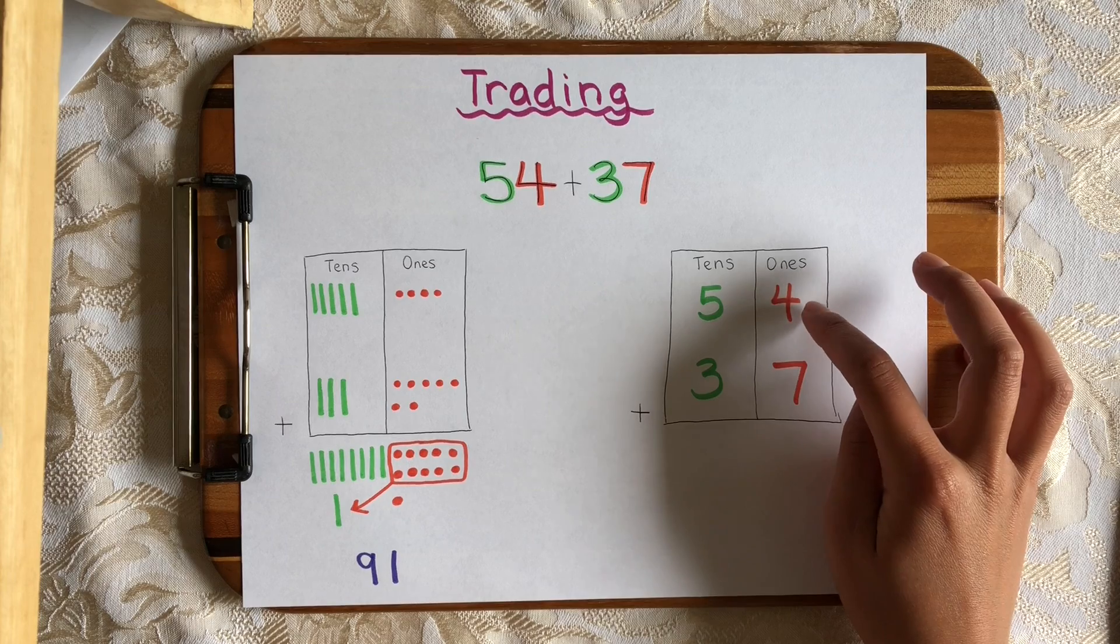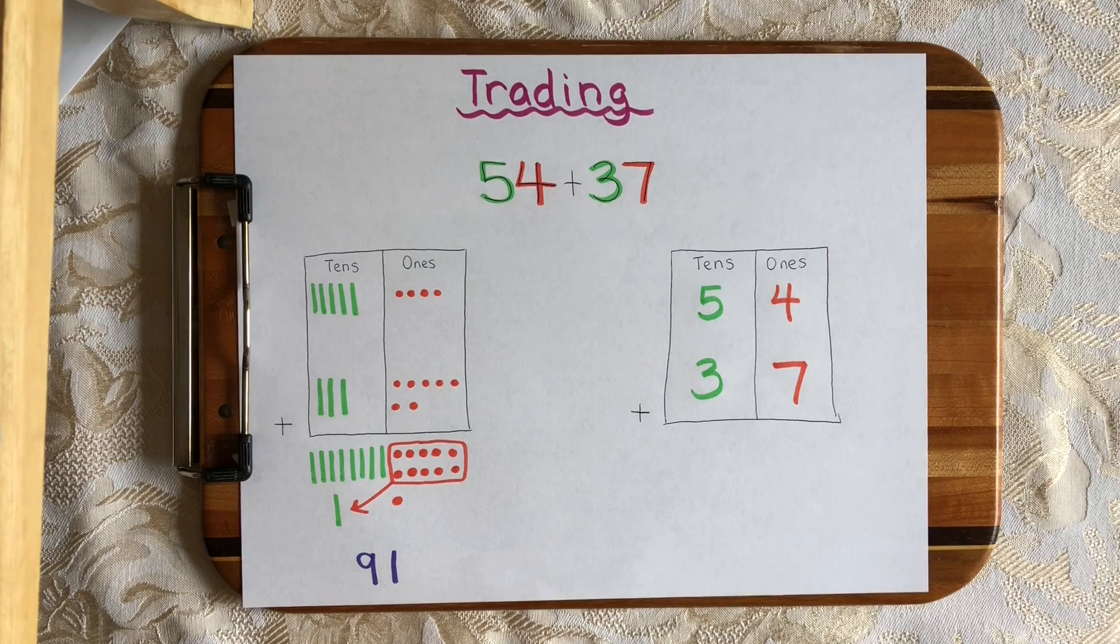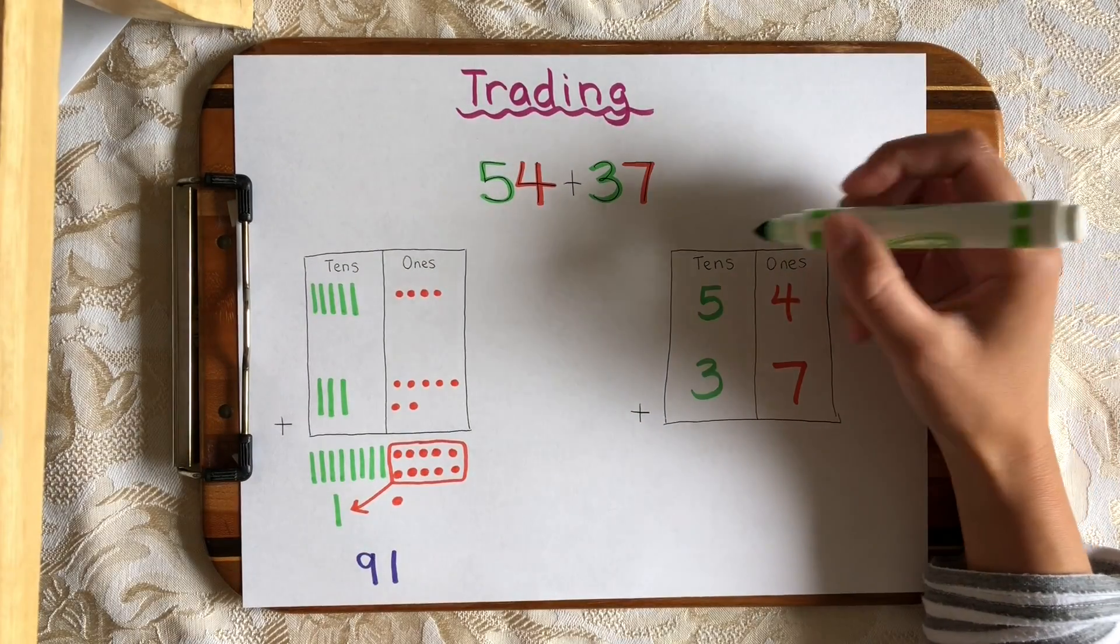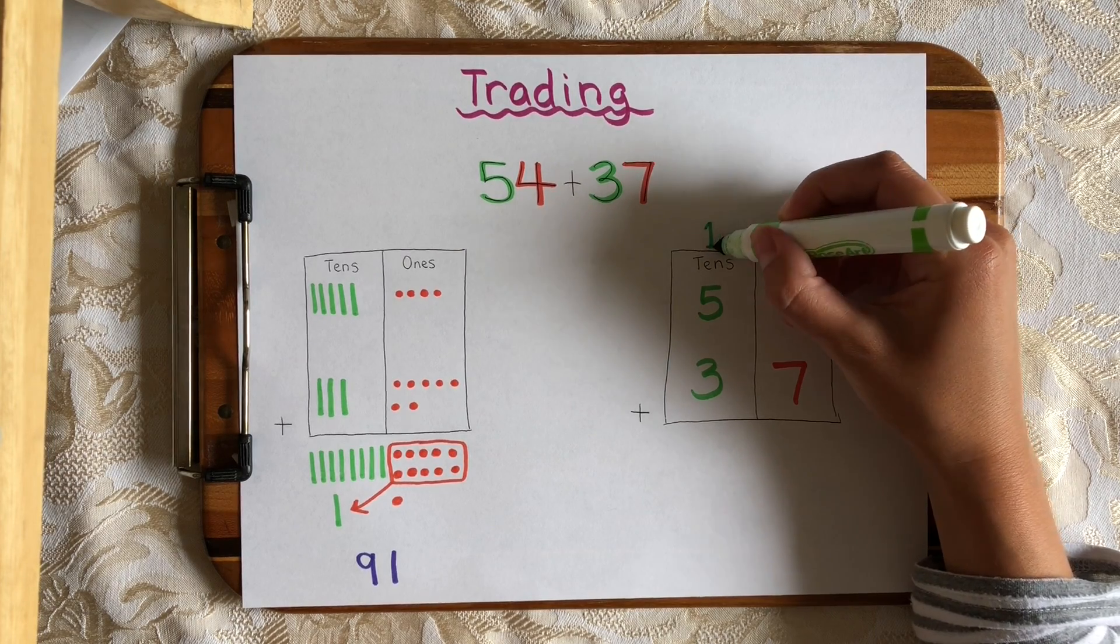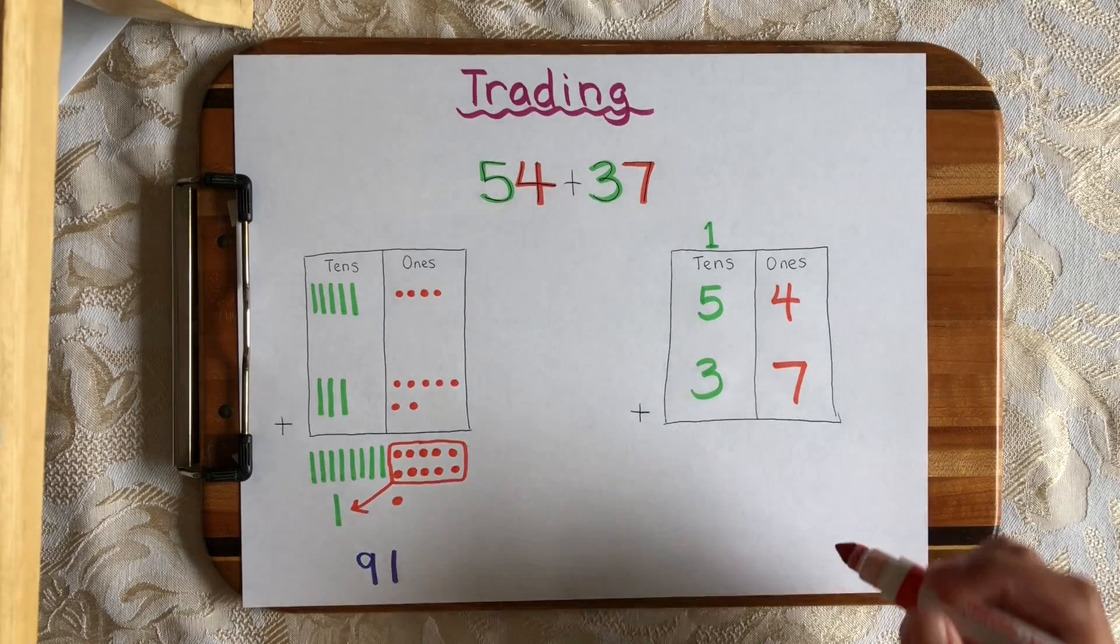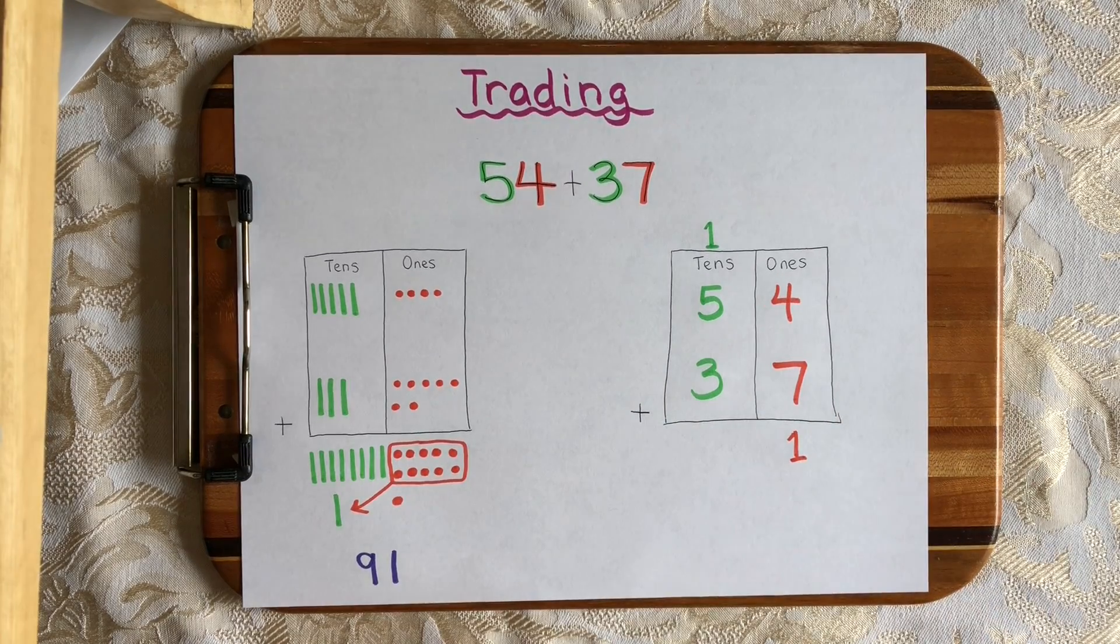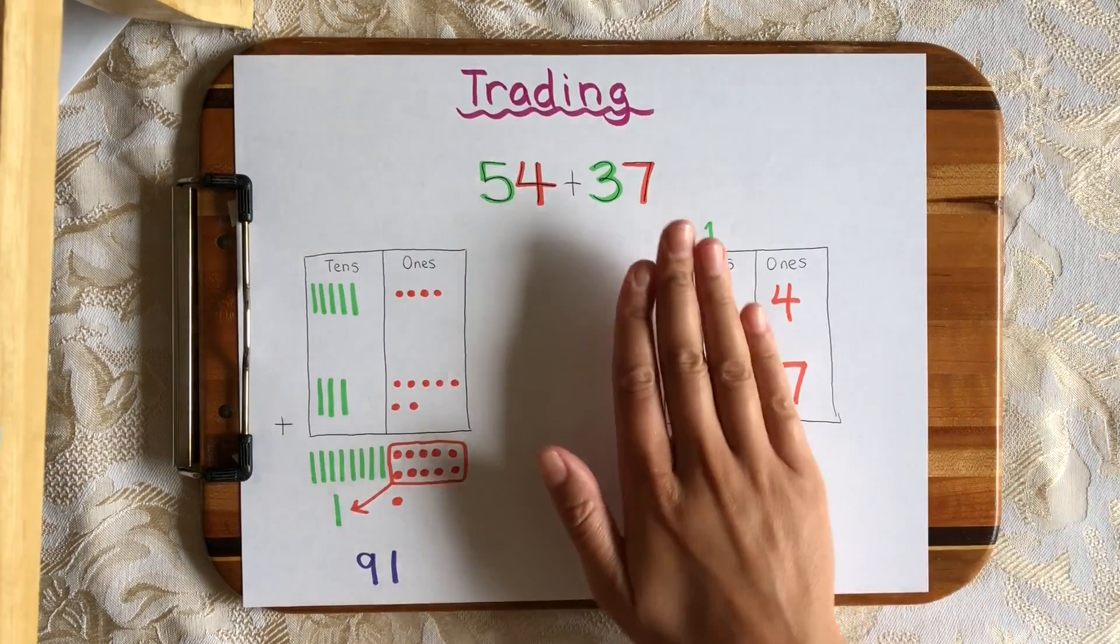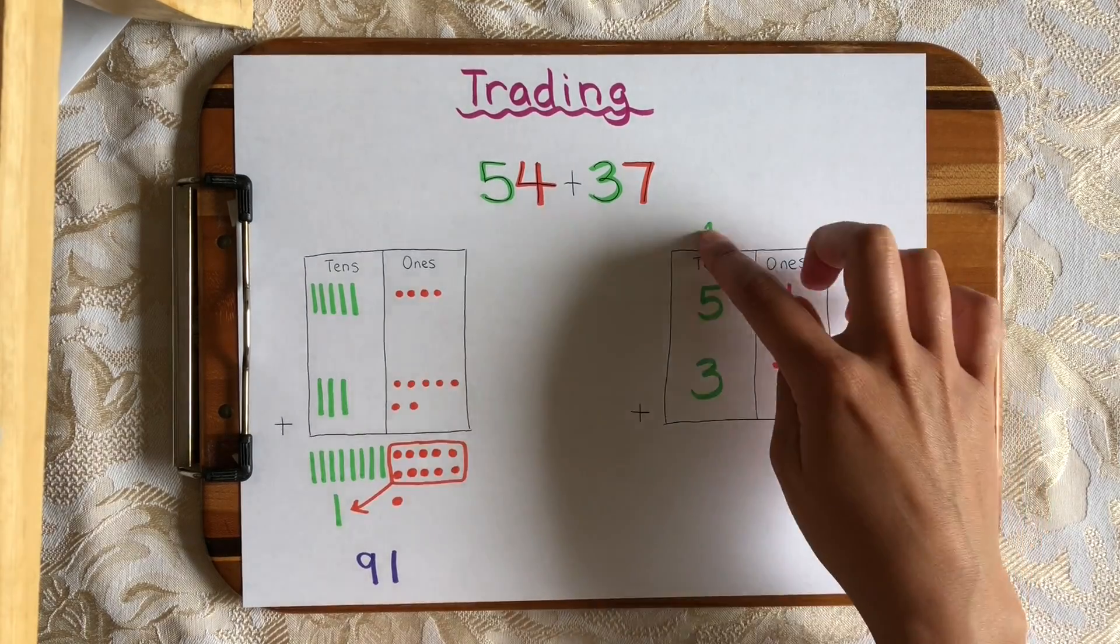Now, just like I did over here, I'm going to add the ones first. So 4 plus 7, we know that's 11. But inside 11, there's 1 10. So when we write 11, it's going to look like this. I'm going to move the 1 from 11 over here to the tens house and keep the 1 from the 11 in the ones place under the ones column. So now if we look like this, here and here, that's 11. 4 plus 7 is 11.